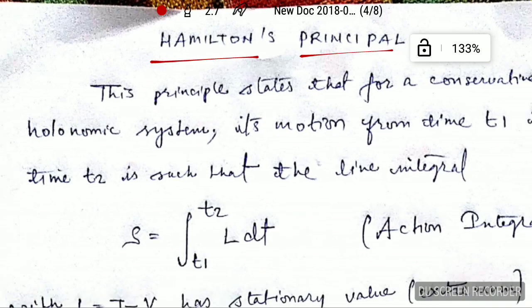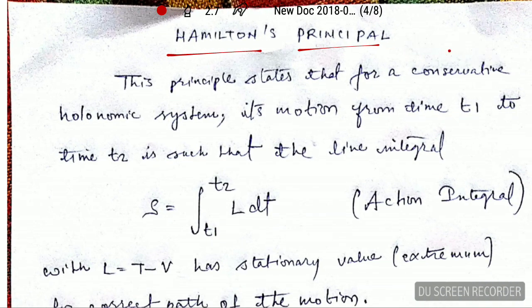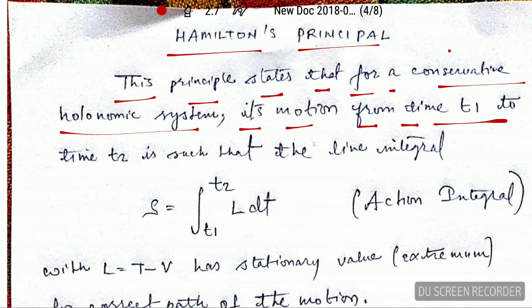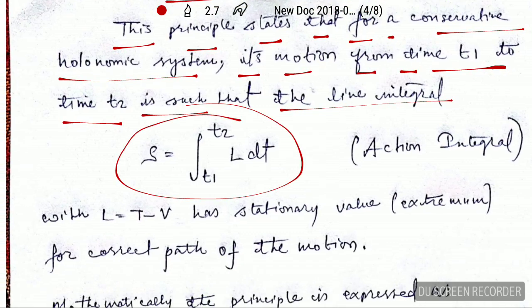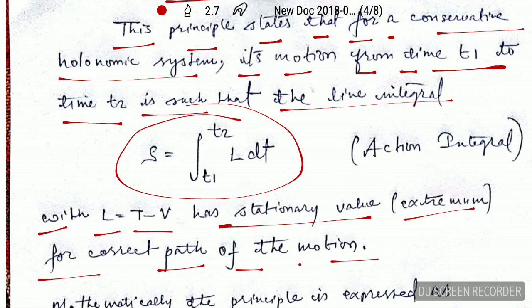This principle states that for a conservative holonomic system, its motion from time t1 to time t2 is such that the line integral — where L equals T minus V — has a stationary value, or extremum, for the correct path of the motion.